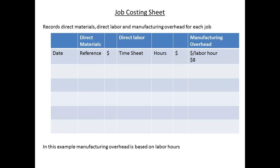Each job will have associated with it a job costing sheet that will record costs of materials, labour, and overhead. The sheet may be kept manually, or it may be a part of a computer programme. Clearly, for large jobs, such as the production of a private jet, the use of accounting software has made this tracking much easier.